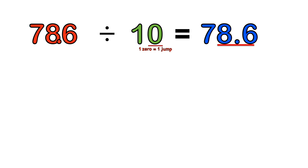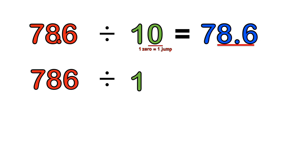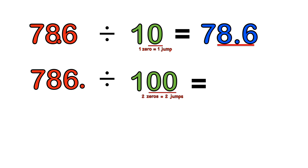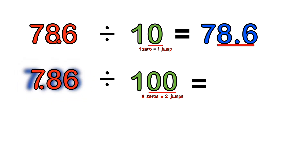786 divided by 100: step one, introduce the decimal point. Step two, two zeros equals two jumps to the left. We move the decimal point two places to the left, and it moves just after the seven. So we have 7.86. Therefore 786 divided by 100 equals 7.86.